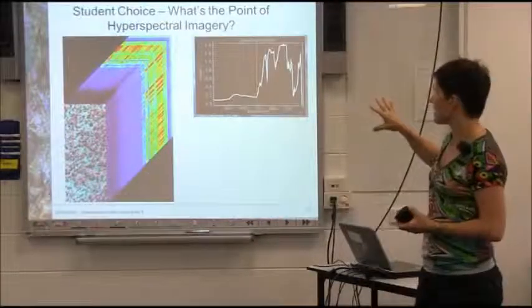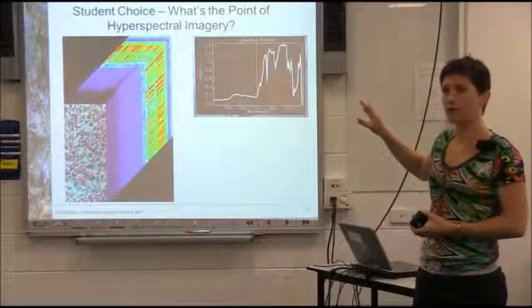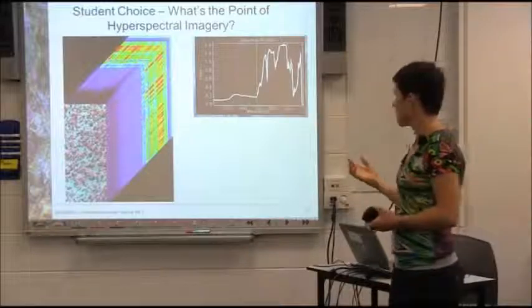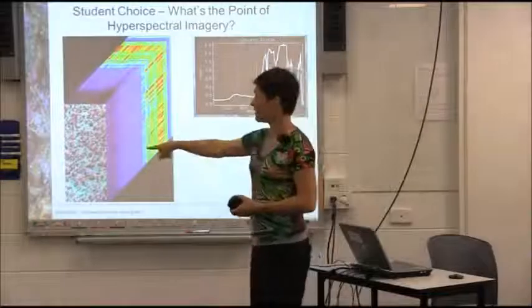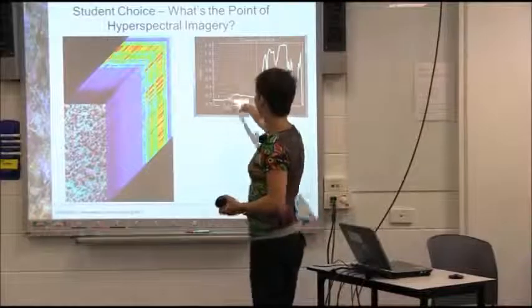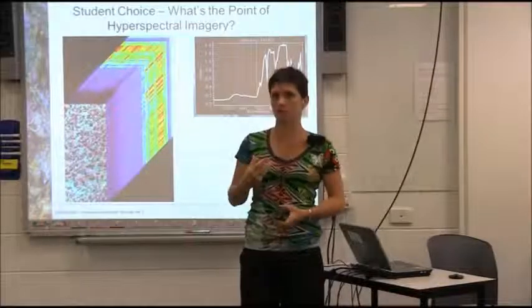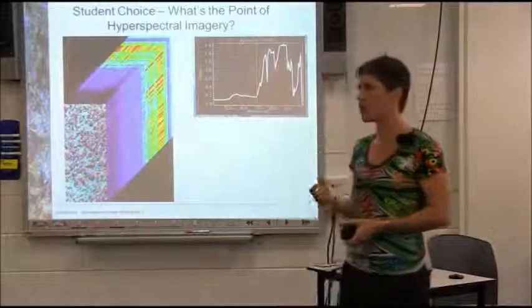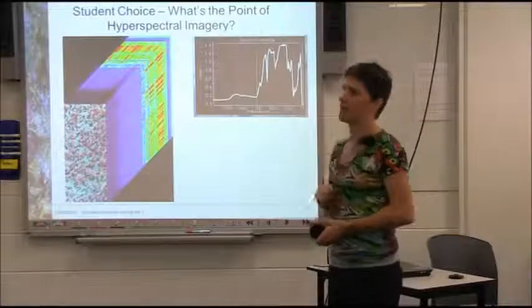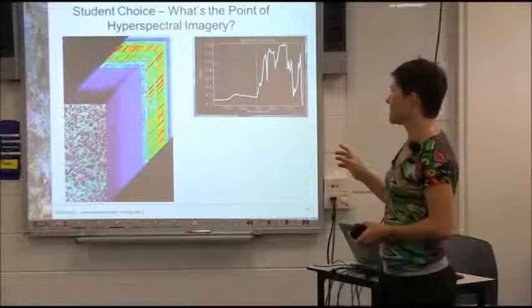So this is an example of a spectral curve that's been taken out from a piece of vegetation in my image. So you can see that although the image only allows me to see three bands at once, I still have the full spectral data there. So I can choose to display any three bands that I like but all the data are there. And this is key because